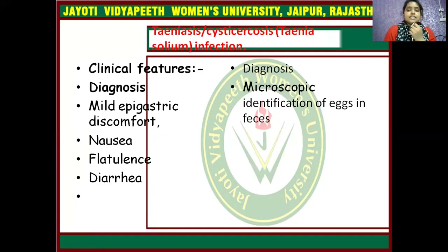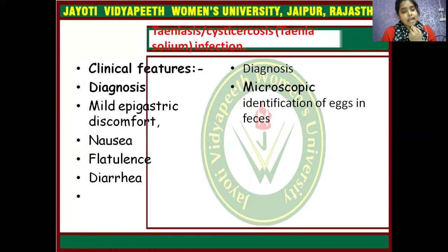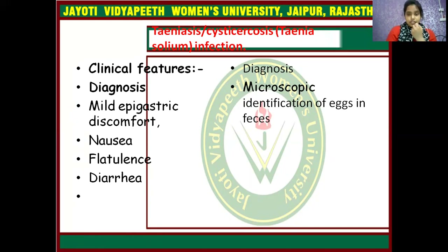Taeniasis and cysticercosis are caused by Taenia solium infection. Clinical features include mild epigastric discomfort, nausea, flatulence, and diarrhea. Diagnosis is the same as for other helminths — microscopic identification of eggs in feces.